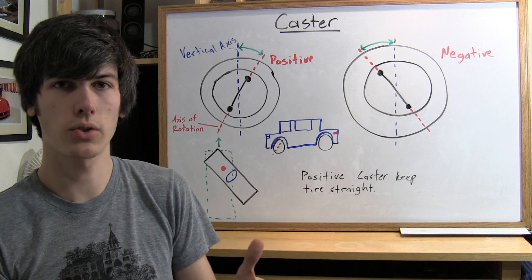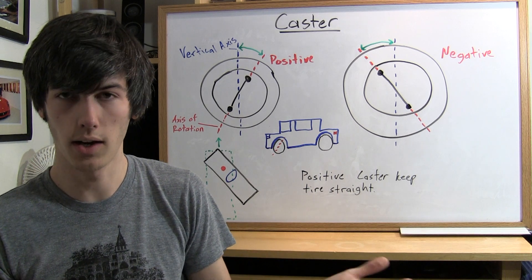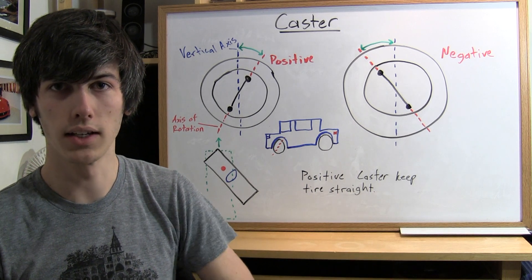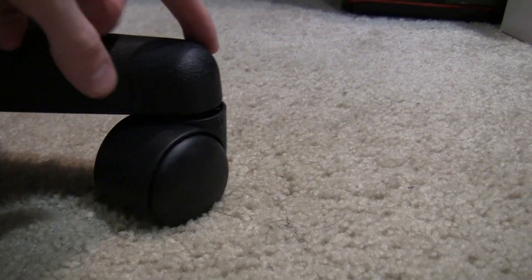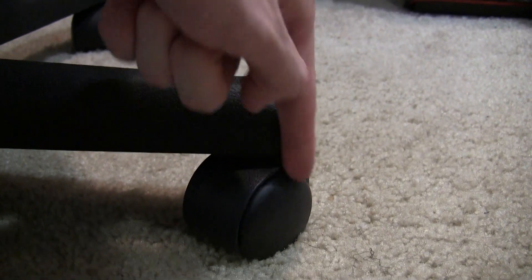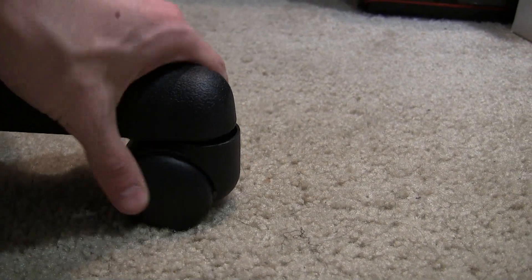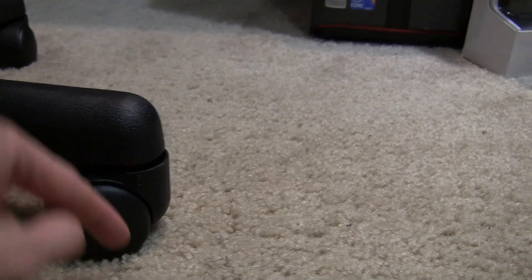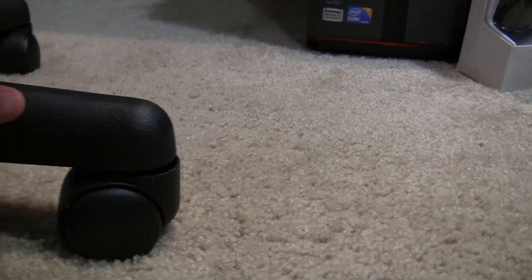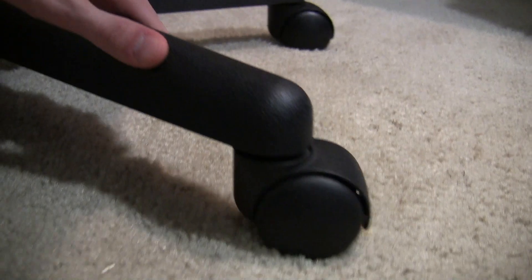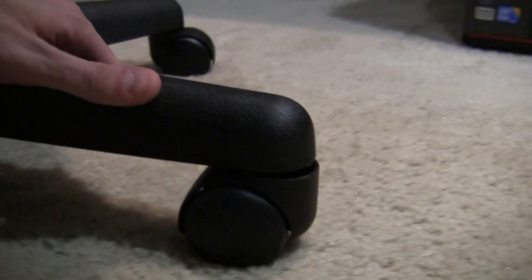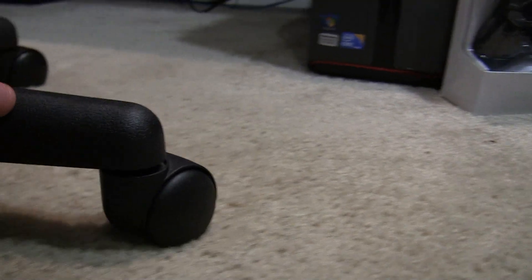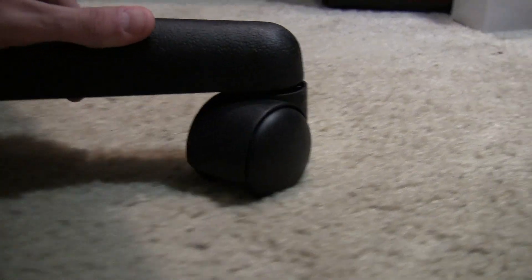I'm going to give a short demonstration of what this looks like just in the chair that I'm sitting in. Here is just a typical office chair and you can see here we've got the steering axis going down right here and the tire patch or this wheel's patch is behind that steering axis. So as you push this in any direction the wheel follows the direction that you're going. That's positive caster.